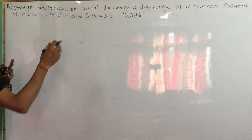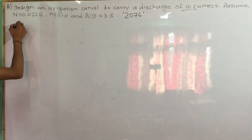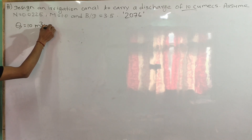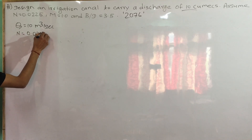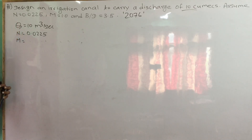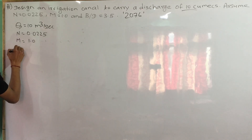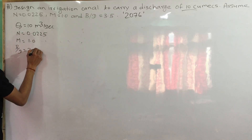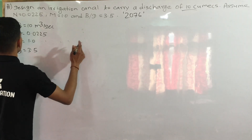We have Q = 10 cumecs discharge. We have m = 0.0225. We have the critical velocity ratio. The B/D ratio is 3.5. That is what we have been given. Now, how do we solve this?